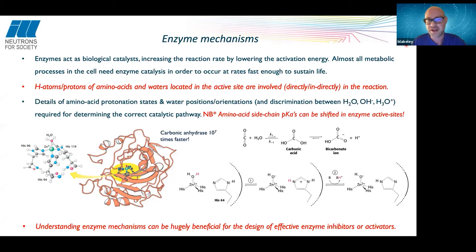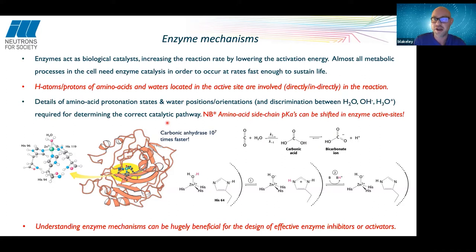You might ask: if we know the amino acid pKas, surely we can just work out the protonation states. That isn't the case, because amino acid sidechain pKas can be dramatically shifted in the microenvironment of an enzyme active site. For example, carbonic anhydrase catalyses the reaction of carbon dioxide and water to bicarbonate and protons. With the enzyme, this process is about 10 to the power of seven times faster than without — in fact it's one of the fastest known enzyme catalyses, limited only by the diffusion rate of the substrates.